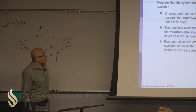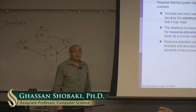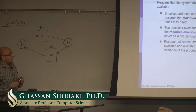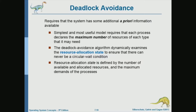We'll talk about deadlock avoidance. We can avoid deadlocks if we require processes to declare the number of instances of each resource that they are going to request — not to request them right away, but just to declare beforehand how many instances of each resource a process is going to request throughout its execution. With this information, we can avoid deadlocks.